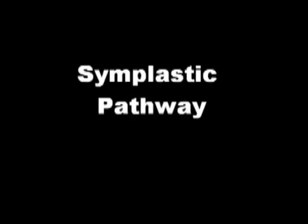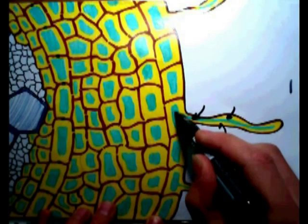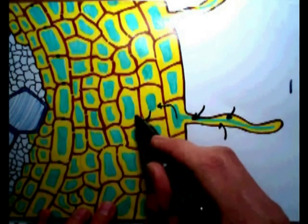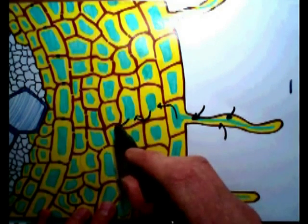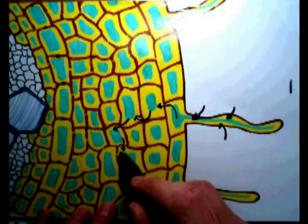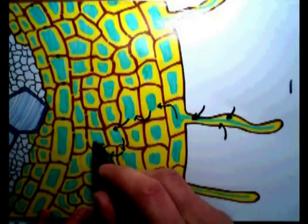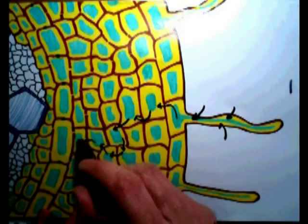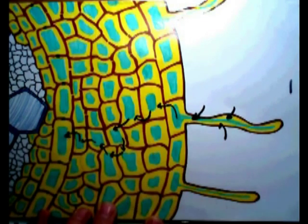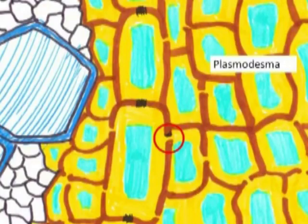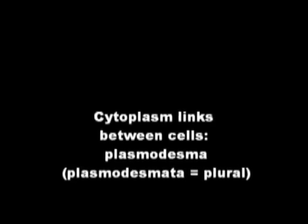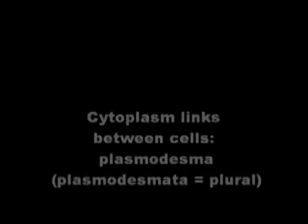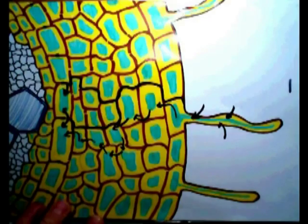The second pathway is the symplastic pathway. 'Sym' means within or together, and 'plast' means form or structure. Water moves through the cytoplasm from one cell to another. There is a connecting space called plasmodesmata, and water moves from one cell to another through these plasmodesmata — the cytoplasmic links between cells.